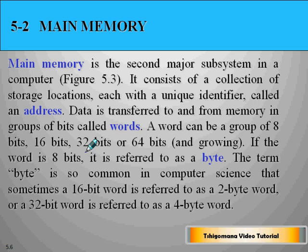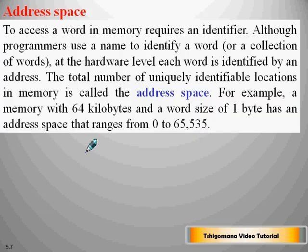The term byte is so common in computer science that sometimes a 16-bit word is referred to as a 2-byte word, or a 32-bit word is referred to as a 4-byte word. To access a word in memory requires an identifier. Although programmers use a name to identify a word or a collection of words, at the hardware level each word is identified by an address.